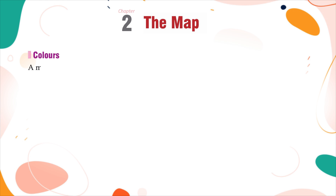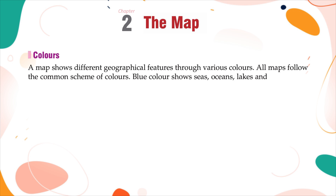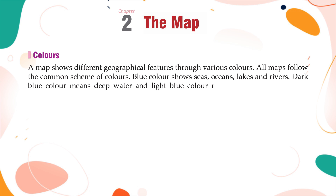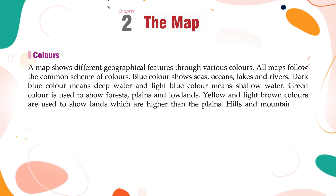Colors. A map shows different geographical features through various colors. All maps follow a common scheme of colors. Blue color shows seas, oceans, lakes and rivers. Dark blue color means deep water and light blue color means shallow water. Green color is used to show forest, plains and lowlands. Yellow and light brown colors are used to show lands which are higher than the plains. Hills and mountains are shown in dark brown color.